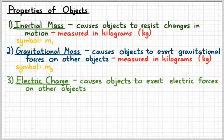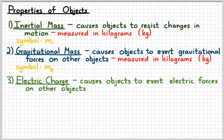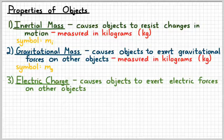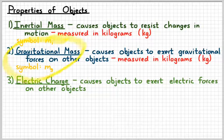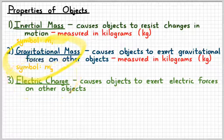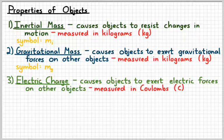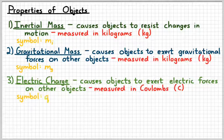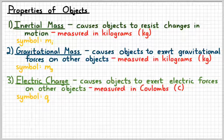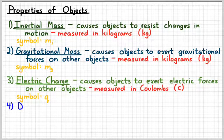The third property that all objects have, excuse me, most objects have, is electric charge. This is the property that causes objects to exert electrical forces on each other. So we're going to see that gravitational forces and electric forces have a lot of similarities between them. We would measure this property in a unit called coulombs, named after a Frenchman named Charles Coulombs. And you could give that unit the symbol c. In equations, we would give electric charge a symbol q. And you can use either a capital Q or a lowercase q.